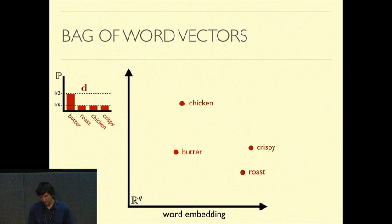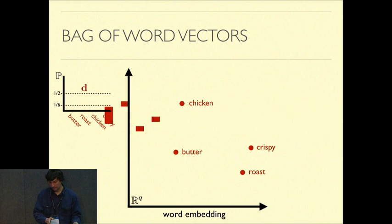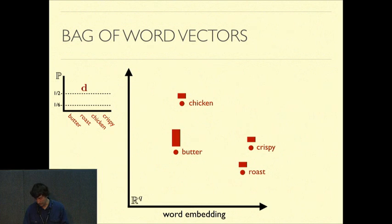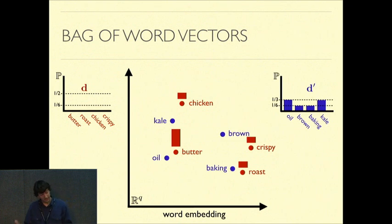So, given this embedding, what we can do is we can take a document. For instance, this is a recipe about roasted chicken. And we can first, on the left, compute the normalized bag of words representation of the document. This is just the normalized counts of each word in this document. And then we can also take the word embeddings of each of these words. And with this, we can imagine placing these histogram bins at the location of the word embeddings for each word. And I'll call this a new representation. And the term I'll use for it is a bag of word vectors, because it's similar to bag of words, but now we have a vector representing each word. And then we can take another document about baked kale and we can also construct the bag of words vector representation.